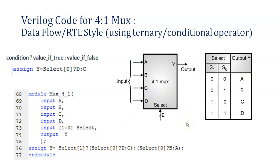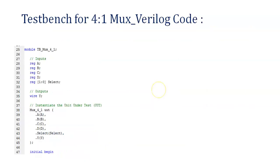However many inputs you have, you need to generate all of them in the test bench. So here the inputs are A, B, C, D, and select[0] and select[1], and depending upon those inputs it will be generating Y.